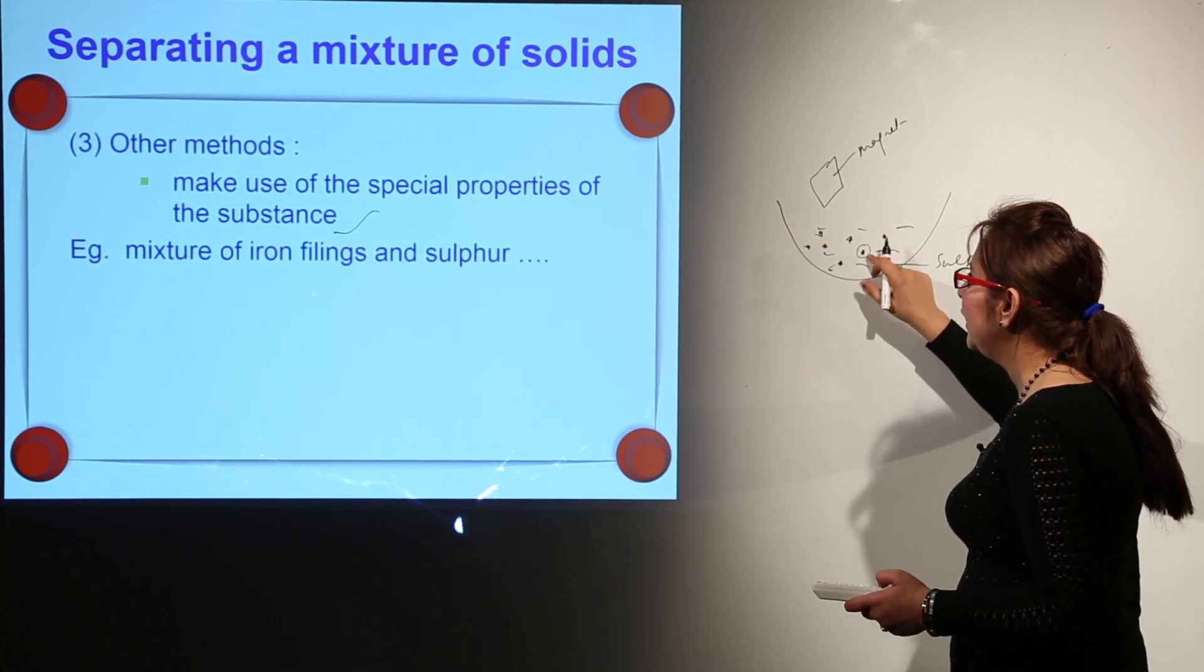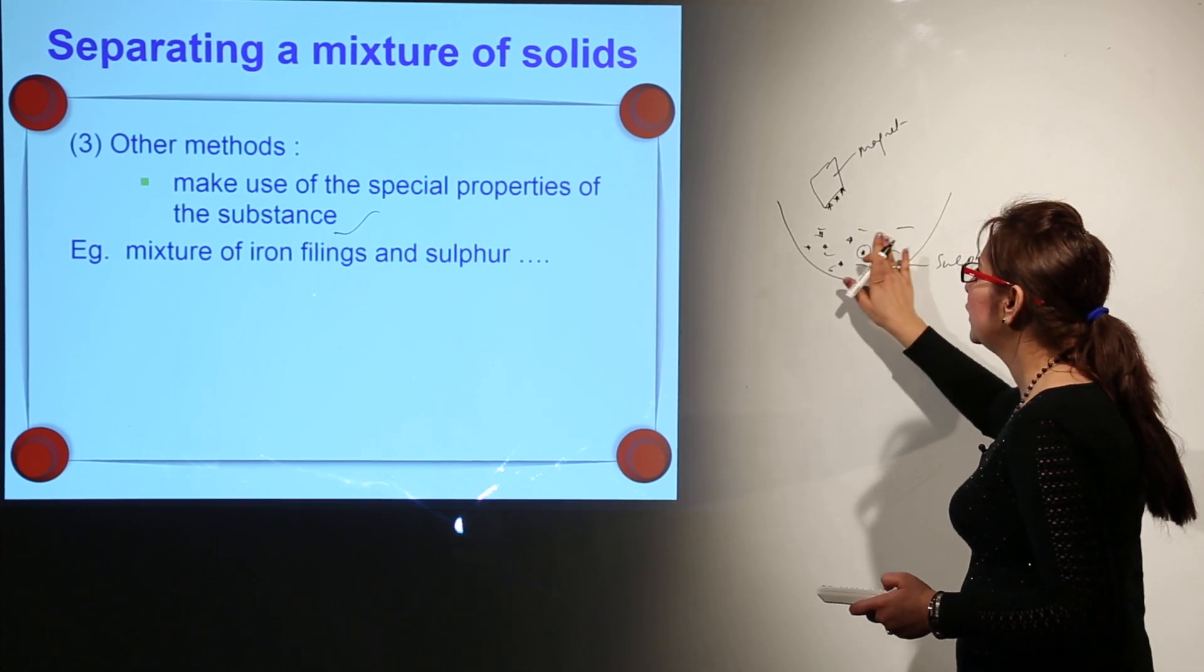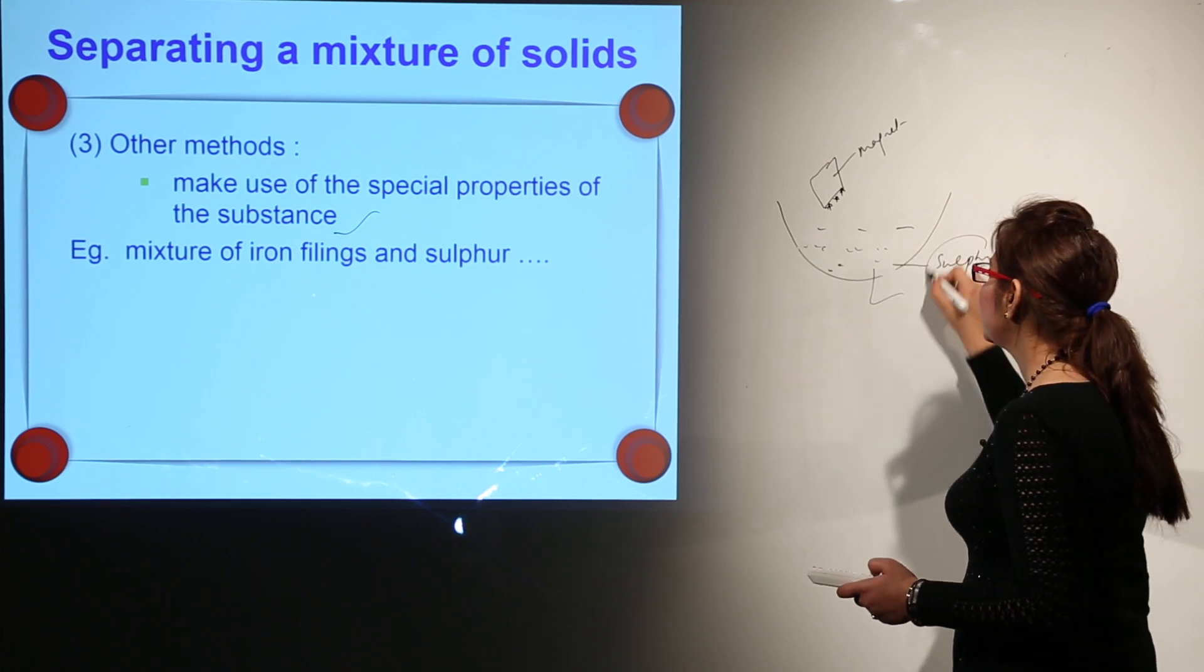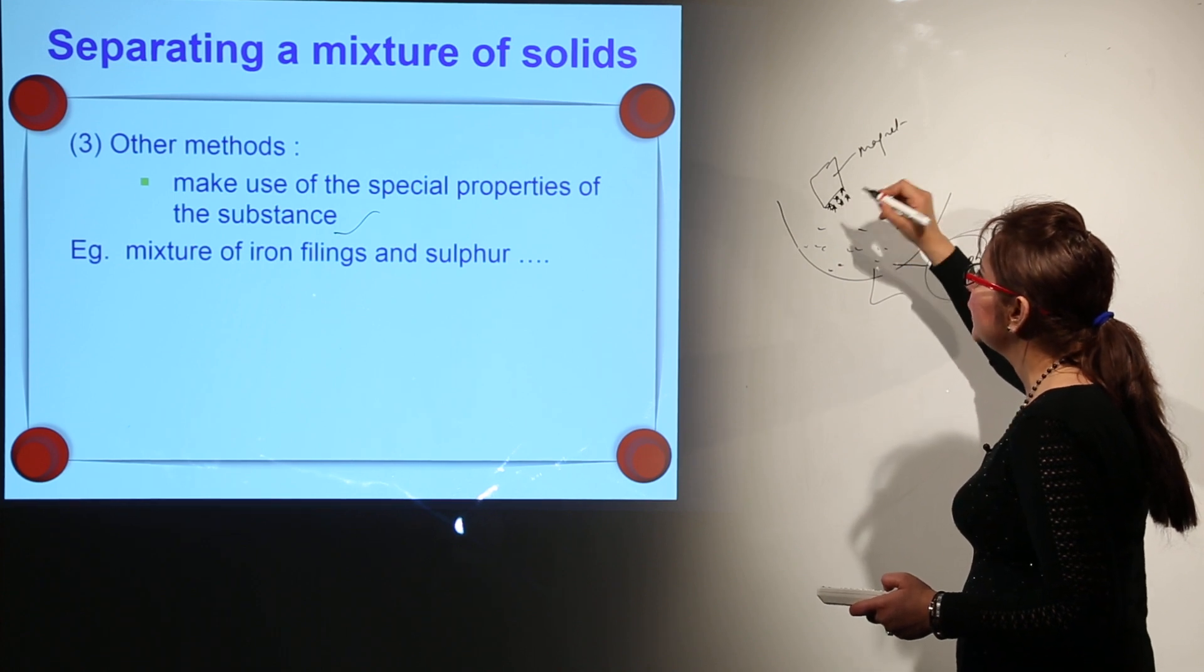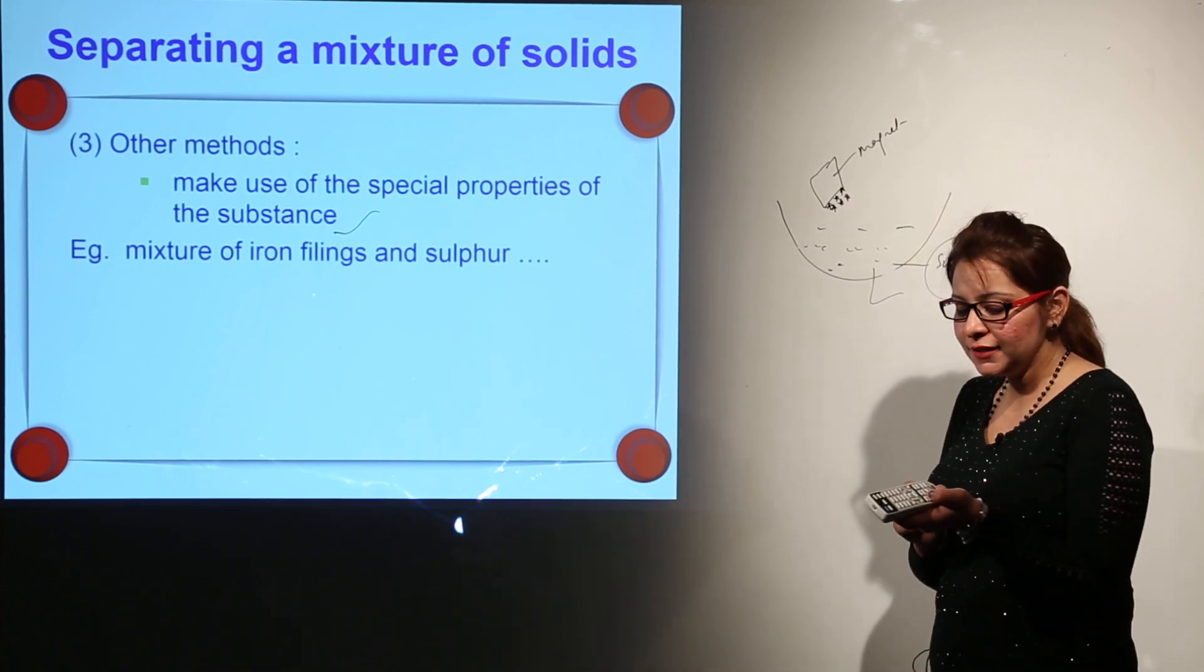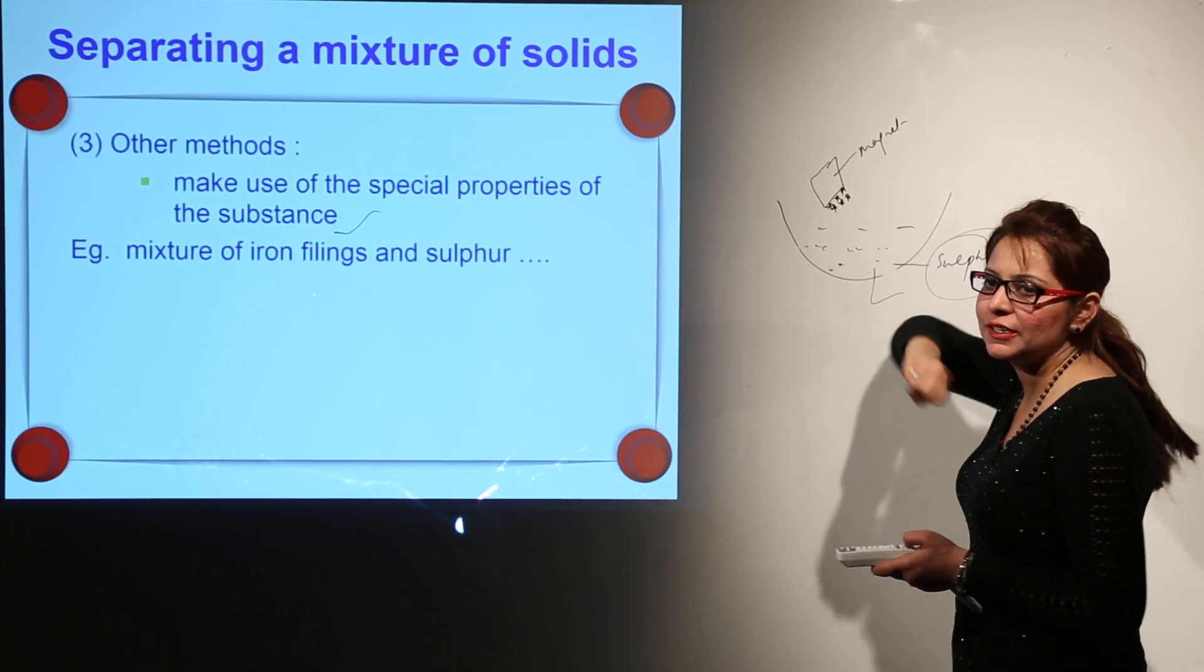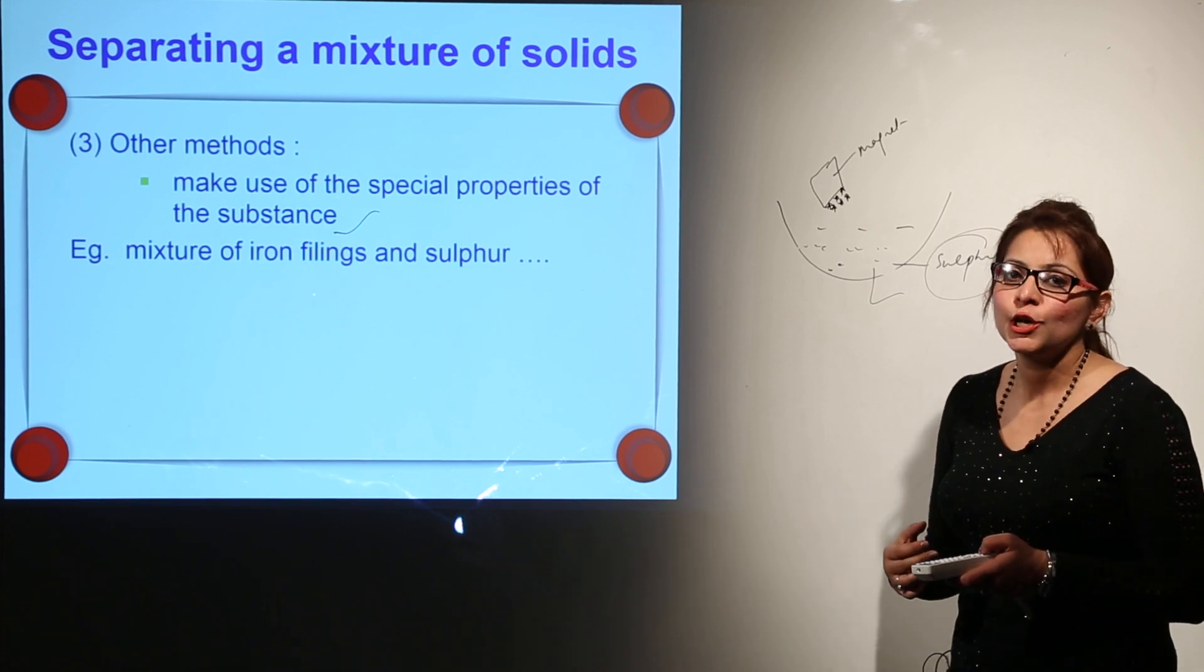What happens when I use the magnet on this mixture? The iron nails will get attracted towards it, but the sulfur powder will stay behind. So in the dish we'll get to see only sulfur after that, and all the iron chips will get stuck to the magnet. This is how the iron filings are attracted to the magnet and what we are left with in the dish is only sulfur powder.